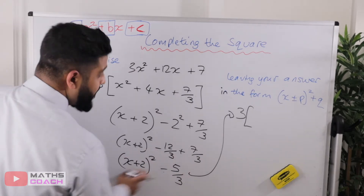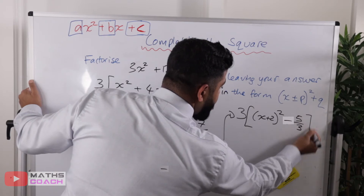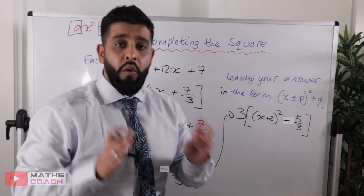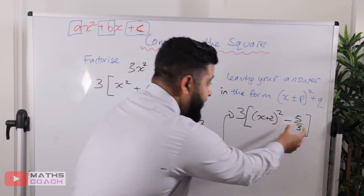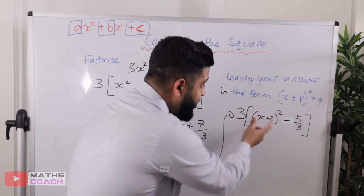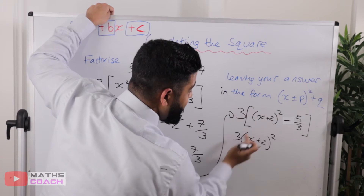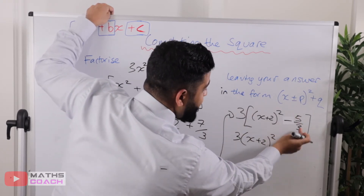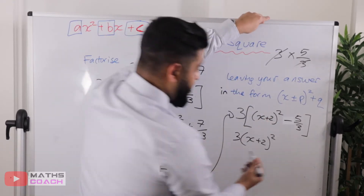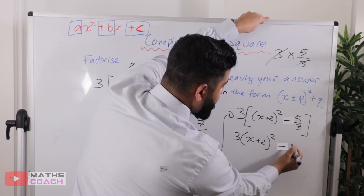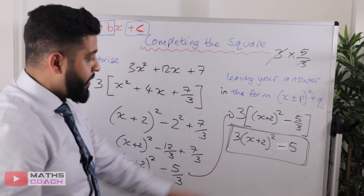That 3 that's been hanging around outside is now going to be reintroduced. I'll write x plus 2 squared minus 5 over 3 inside a square bracket, with the 3 outside. Now I'll multiply the 3 with everything inside. I treat each term separately: 3 times the first term gives 3 times the bracket x plus 2 squared, and then 3 times 5 over 3 — the 3s cancel out, leaving just 5.